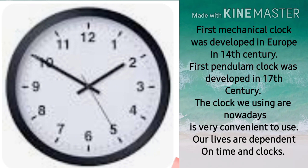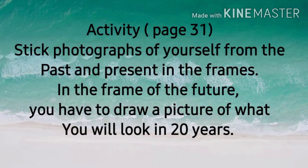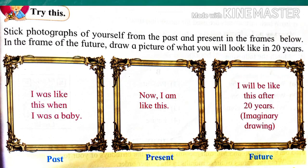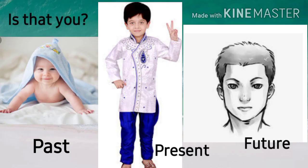Our lives are dependent on time and clocks. On page number 31 of your textbook, you have a very interesting activity. You have to stick your photographs from the past and the present — meaning when you were a baby and how you look now. In the future frame, you have to draw a picture of yourself of what you will look like in 20 years.